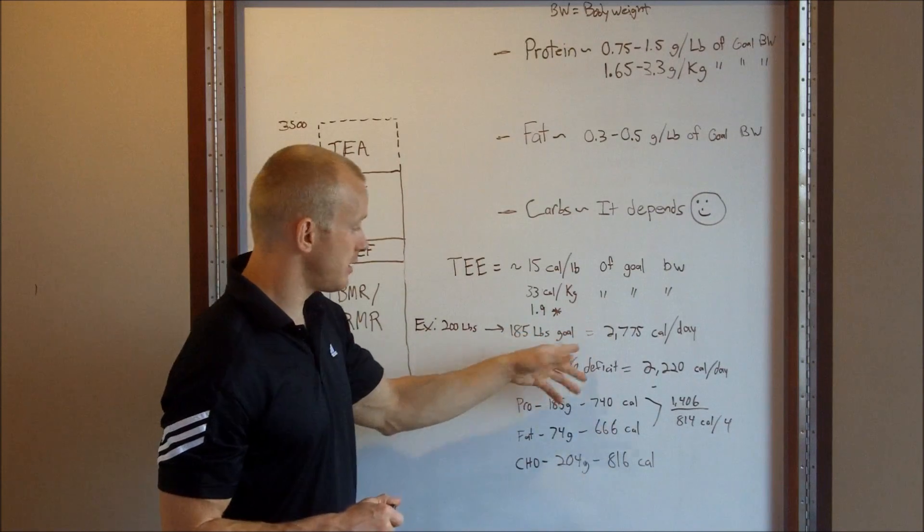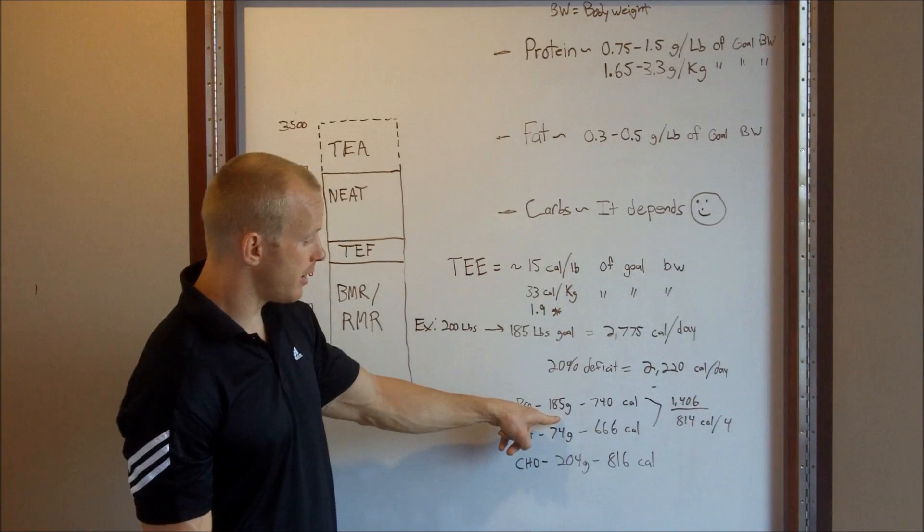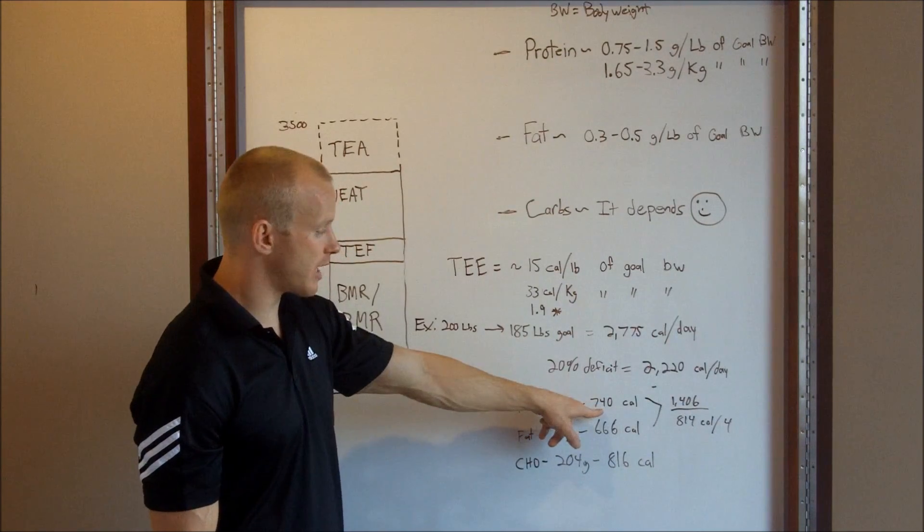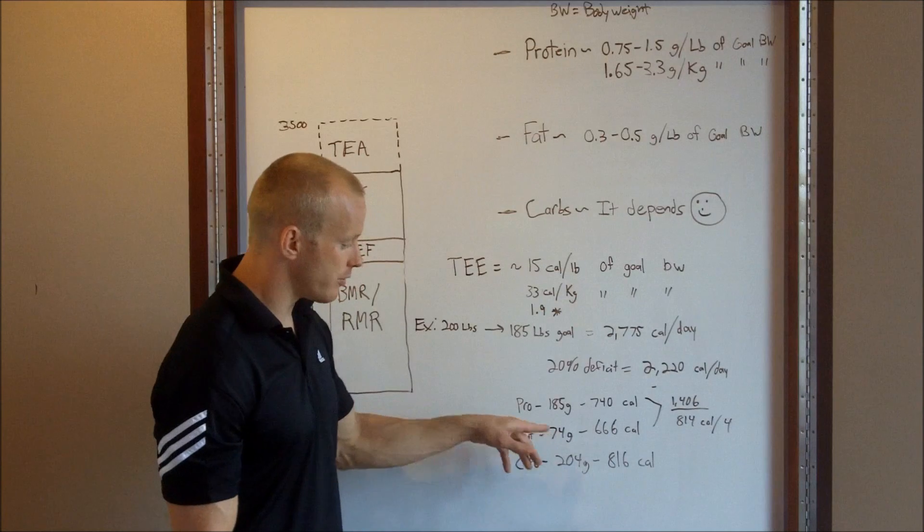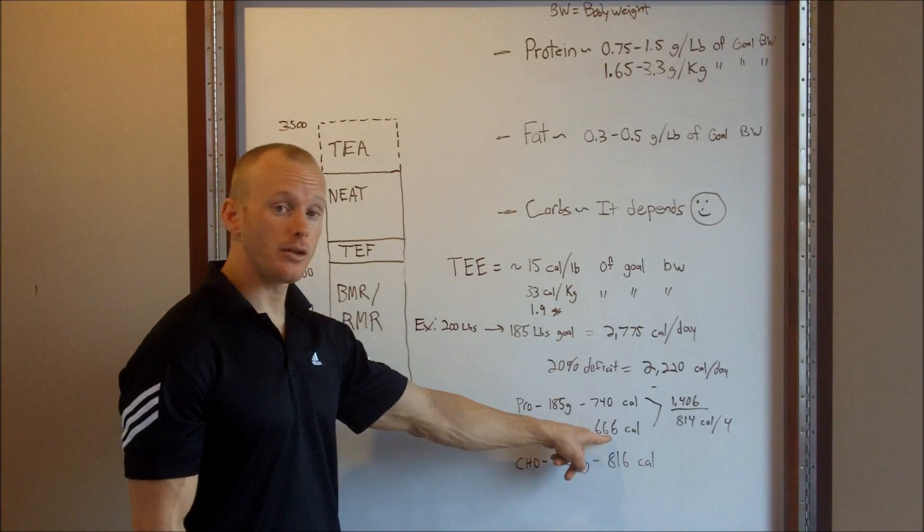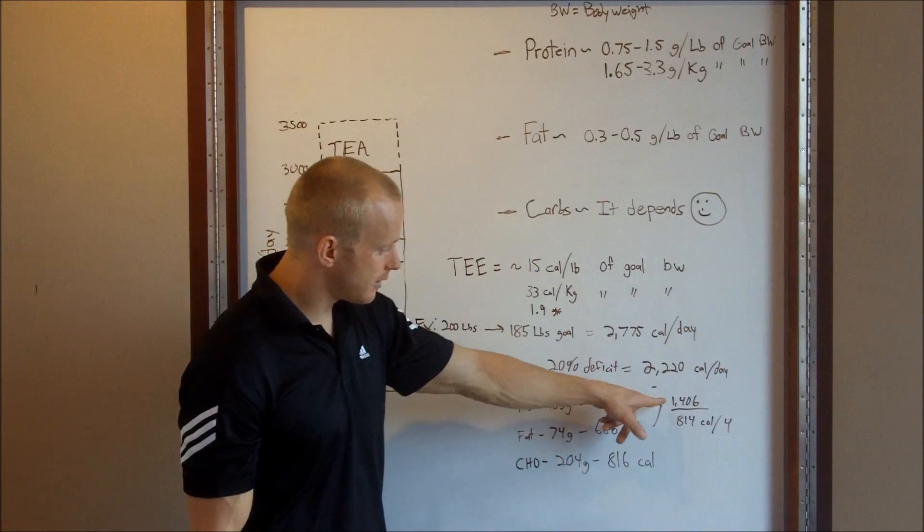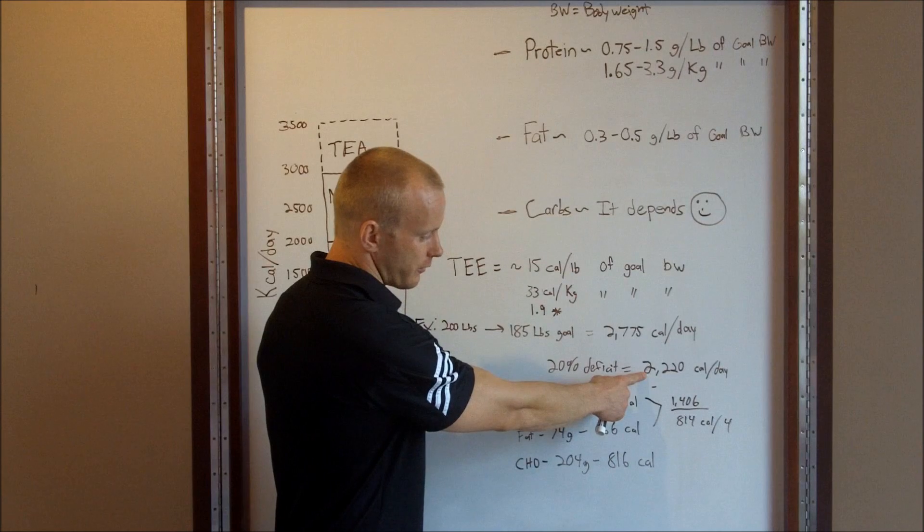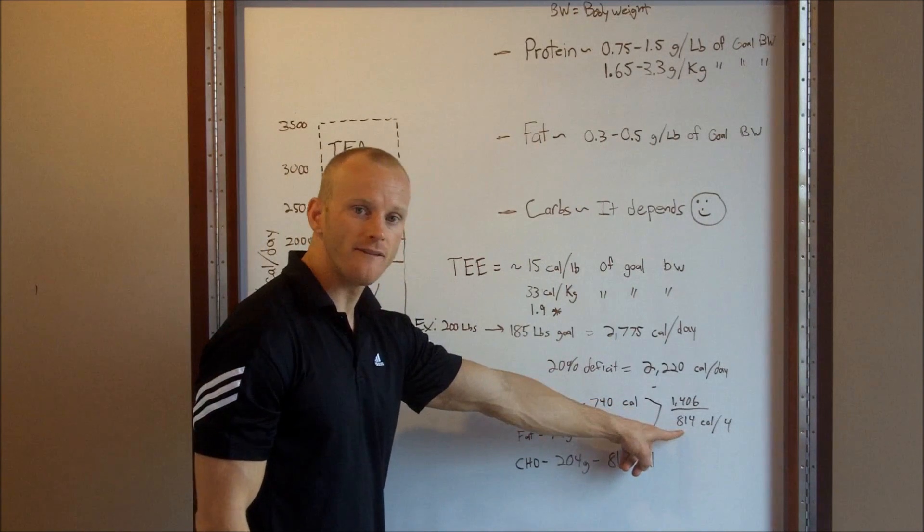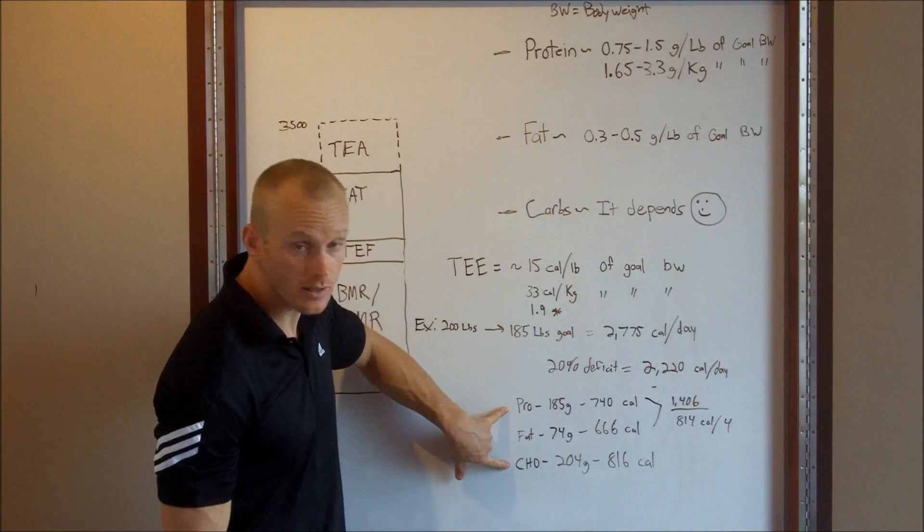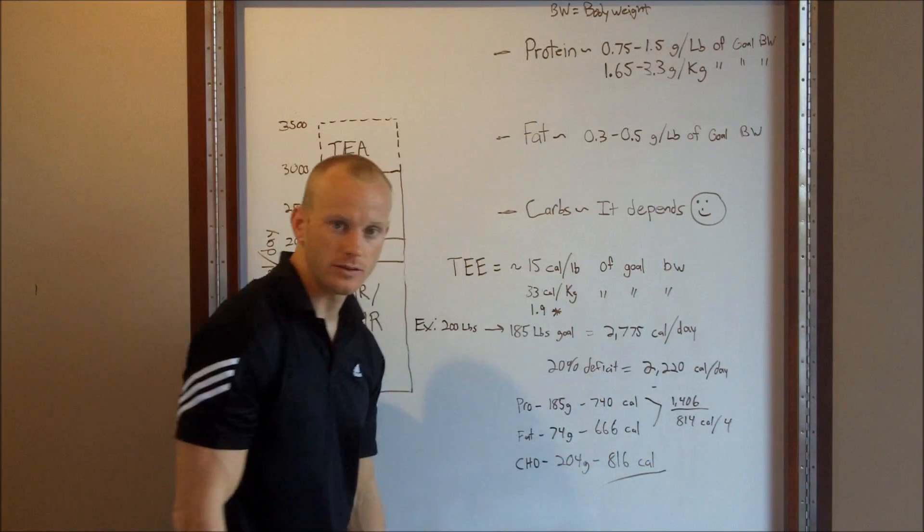But, so we'll come down here, back to my goal. So, I calculated my deficit at 2,220. So, first what I'll do is I'll take my protein and I'll calculate it. Again, I set it at one gram per pound of gold body weight, 185 grams, times four because there's four calories per gram is how I arrive at 740 calories. My fat, I went ahead and put that at, I think I put it right at 0.4 right in the middle per pound of gold body weight, so I'm at 74 grams, times nine because there's nine calories per gram of fat, that's 666 calories.